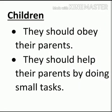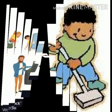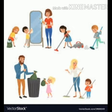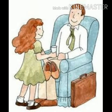Similarly, the children also have some responsibilities towards their families. But how can they help their parents? They can help them to do some small tasks. They should obey their parents. Small tasks like cleaning, arranging their books and copies, preparing the dining table, and many more. Good children always obey their parents.